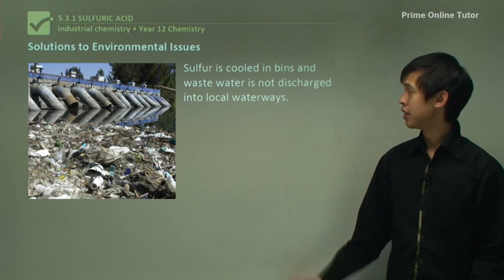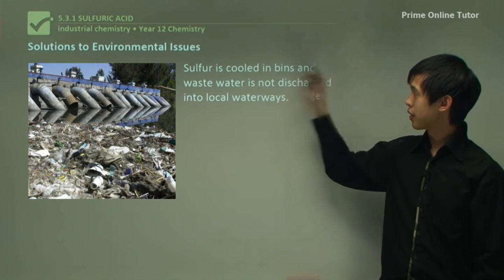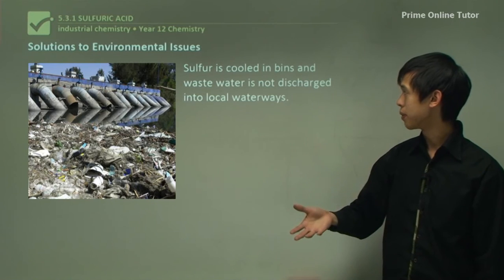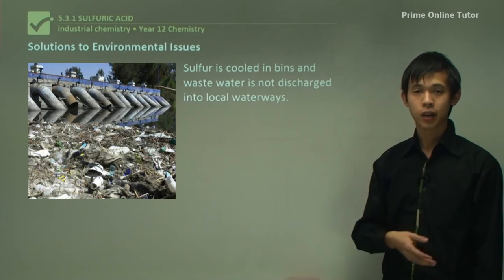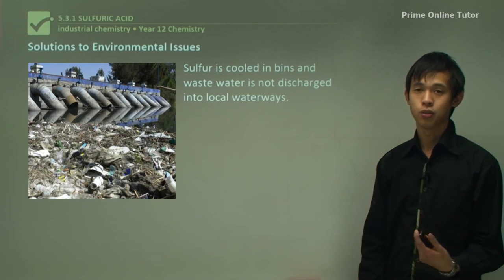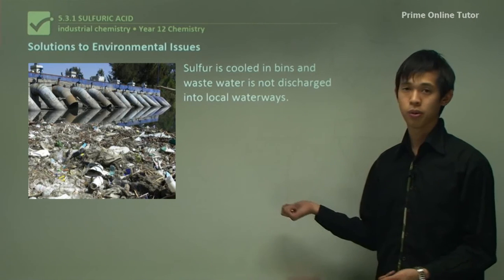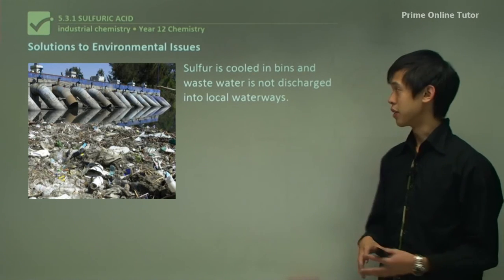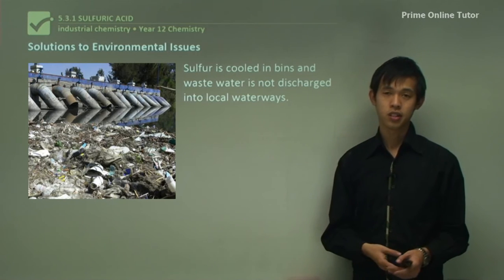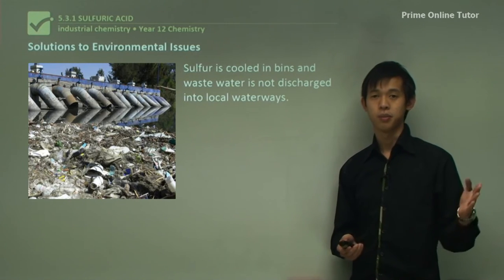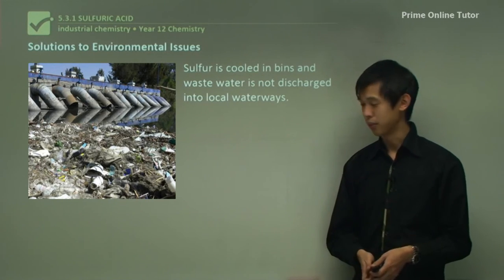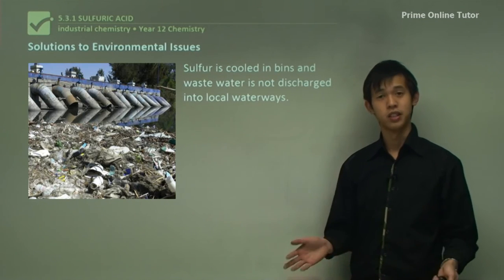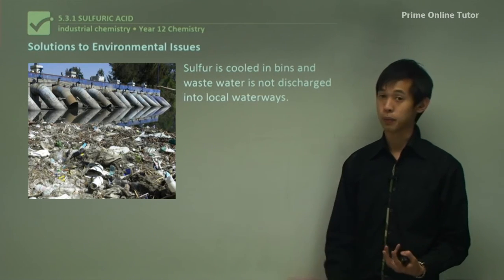To address these problems: we can allow the sulfur to cool in bins away from waterways, and we can ensure the wastewater is not discharged to local waterways. We let it cool somewhere else and then return it to the waterway once it's cold, or we recycle it in a closed loop.